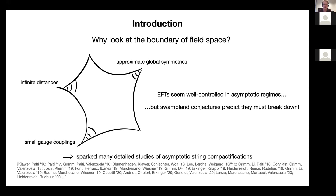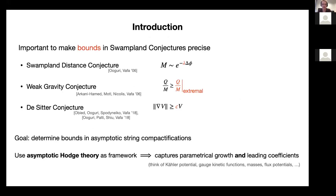What's important in this program is to make the scale at which these quantum gravity effects set in precise. The way we can do this in swampland conjectures is by looking at the precise bounds on the order-one coefficients that are put in these swampland conjectures. One way to make these bounds more precise is to study string compactifications and actually compute what, for instance, charge-to-mass ratios there are for extremal black holes. Then we know what kind of bounds we have to search for when looking for superextremal particles in these theories.